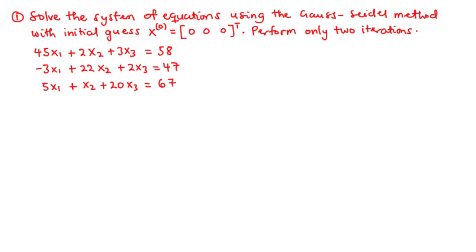We also need to understand that the Gauss-Seidel iteration method does not guarantee convergence at all times. As we already know from previous lessons, if the system is diagonally dominant, then we are going to have a higher chance that the approximations are going to converge to the exact solution. However, if the system is not diagonally dominant, then the system may either converge or may not converge at all.